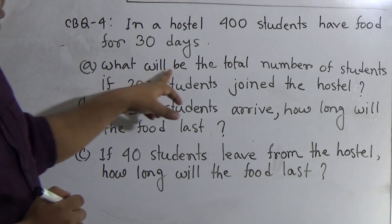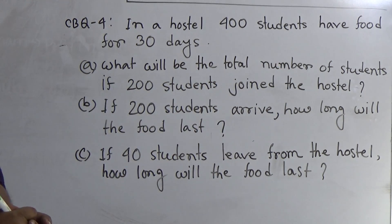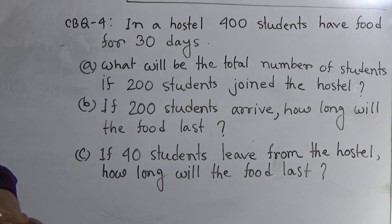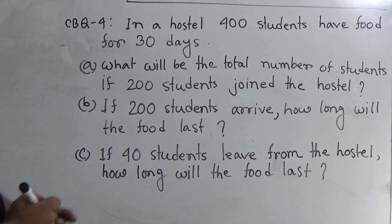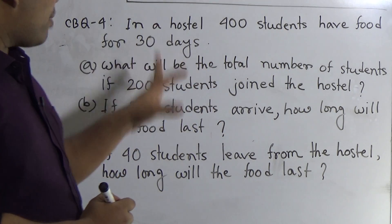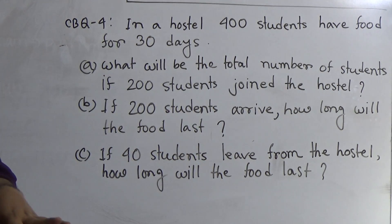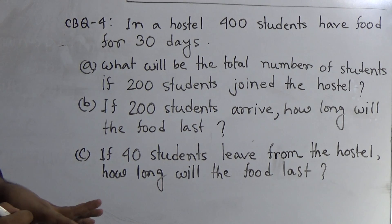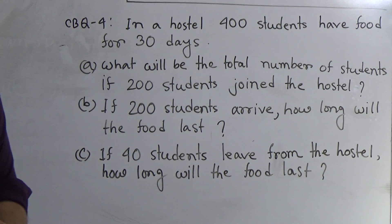Question A is: what will be the total number of students if 200 students joined? That means, the hostel has 400 students and next 200 students join. After joining 200 students, what will be the total number of students? It is easy — we do addition and we get the total number of students.